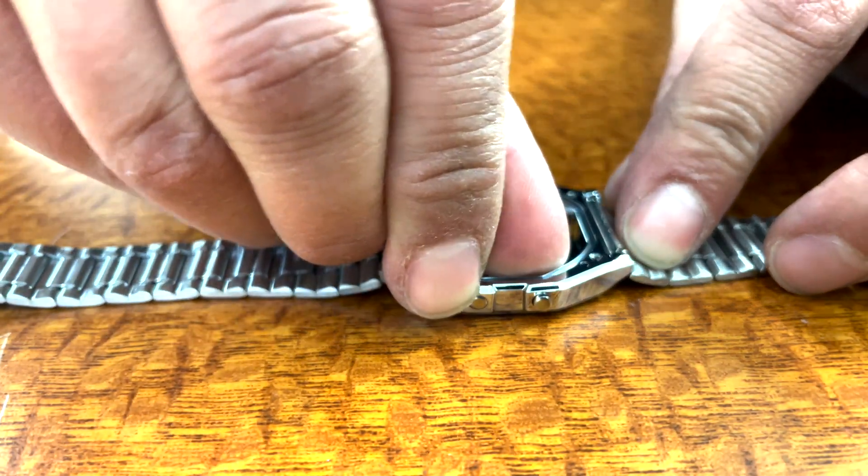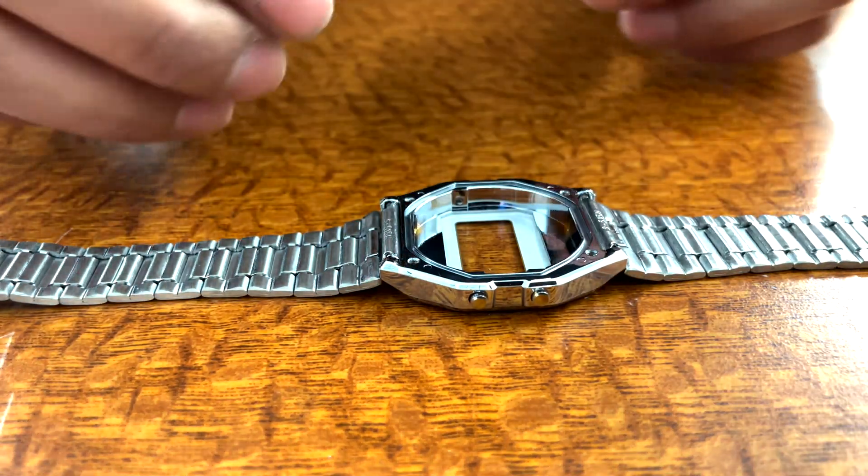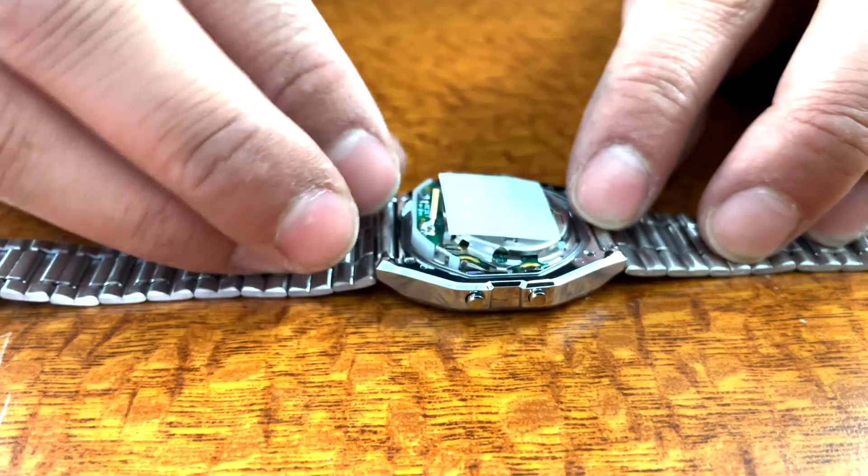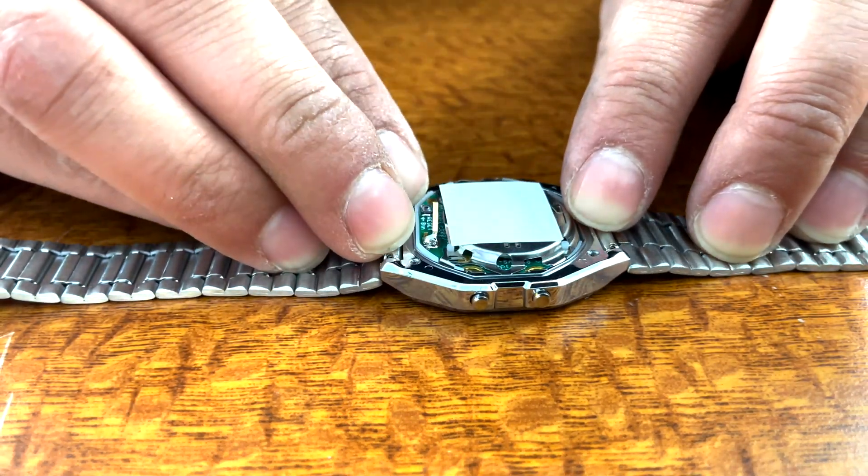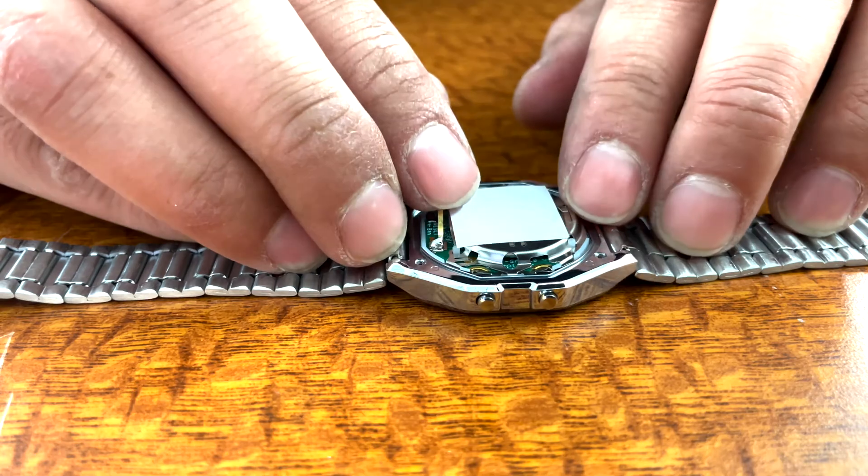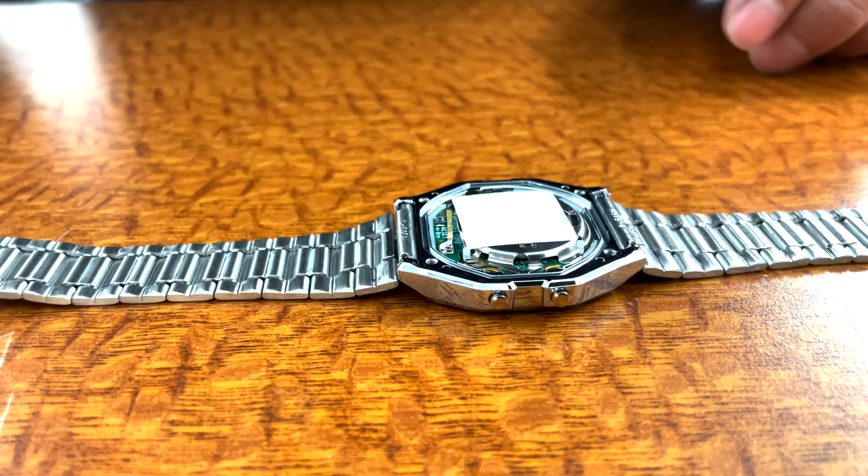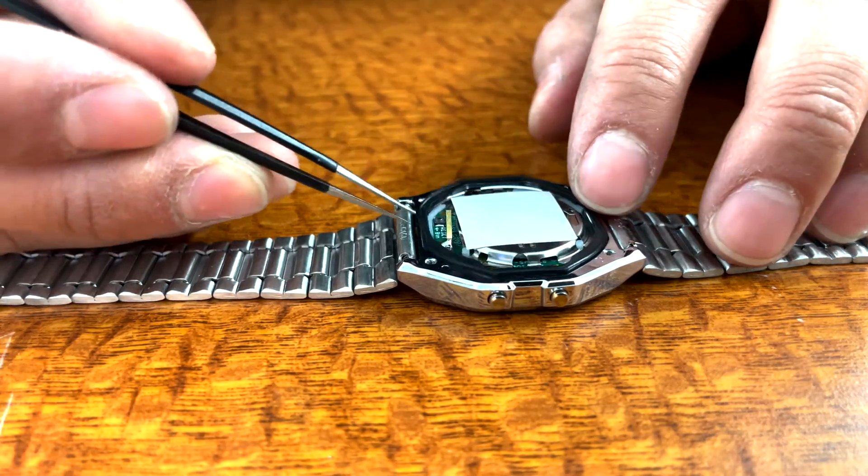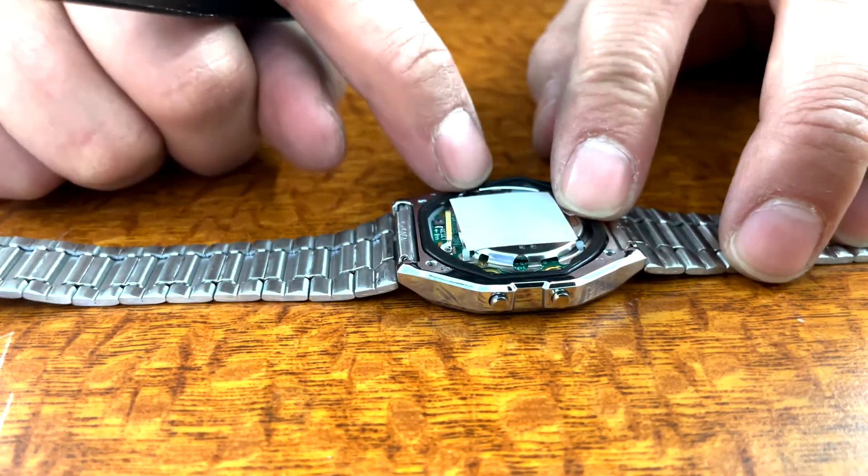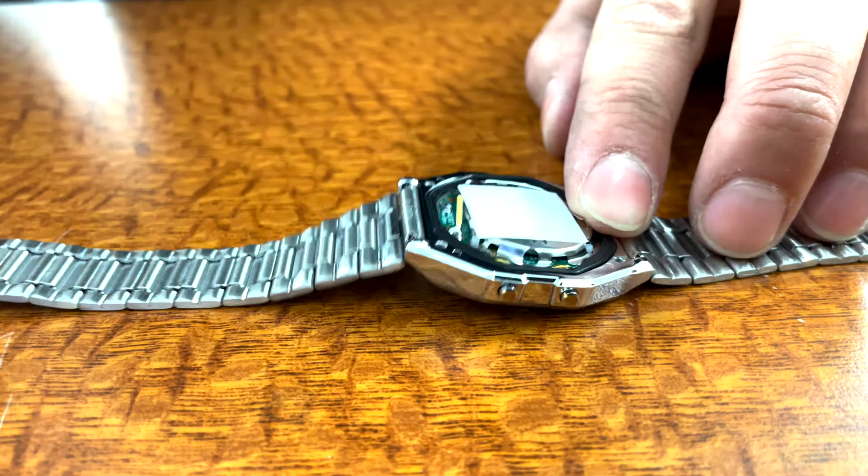First, make sure each of the pushers is pushed to the out position. Then, gently place the movement into the watch case, making sure the side with two buttons matches the side with two pushers. Once again, using either your fingers or the tweezers, gently place the black rubber gasket in the recessed area reserved for it and make sure that it's laying flat.